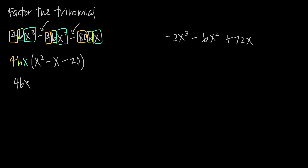And in fact, we can. We'll get 4bx times — when we look at the factors of 20, we're going to use the factors 5 and 4, because if we take a negative 5 and a positive 4, we'll get negative 1, which is the coefficient on this first degree x term. So we're going to get x minus 5 and x plus 4. And if we want to double check ourselves, we can always multiply these two factors back out: x times x gives us x squared; plus 4x minus 5x gives us minus 1x, or just minus x, like we have in the middle; and then negative 5 times positive 4 gives us negative 20. So we do, in fact, get back to the trinomial we started with. So fully factored, this trinomial is 4bx times the quantity x minus 5 times the quantity x plus 4.